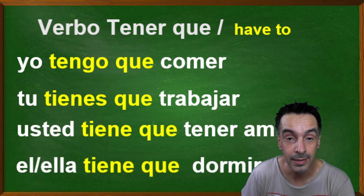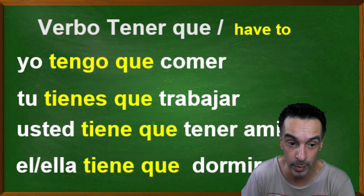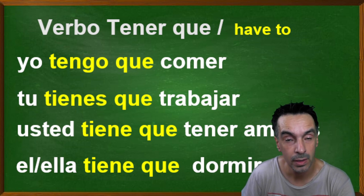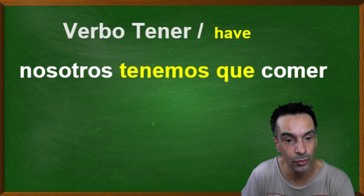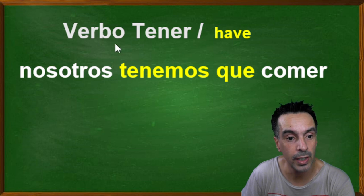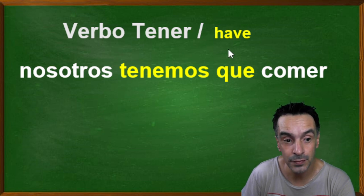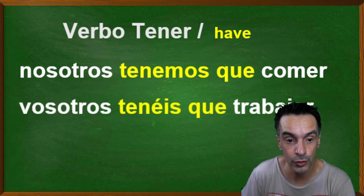Él/ella tiene que dormir — he/she has to sleep. Dormir means sleep. Now let's go to plural. Remember, this is 'have to': nosotros tenemos que comer, vosotros tenéis que trabajar.